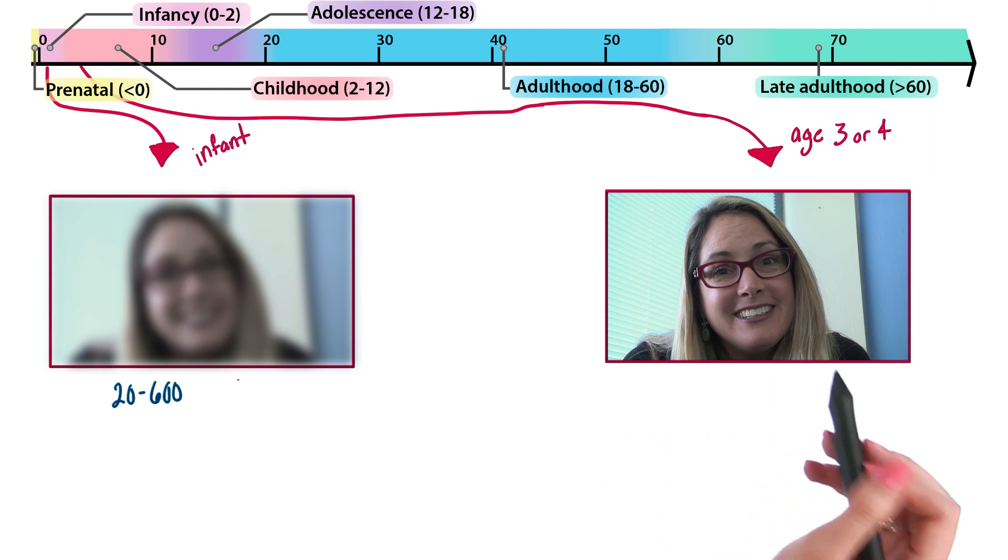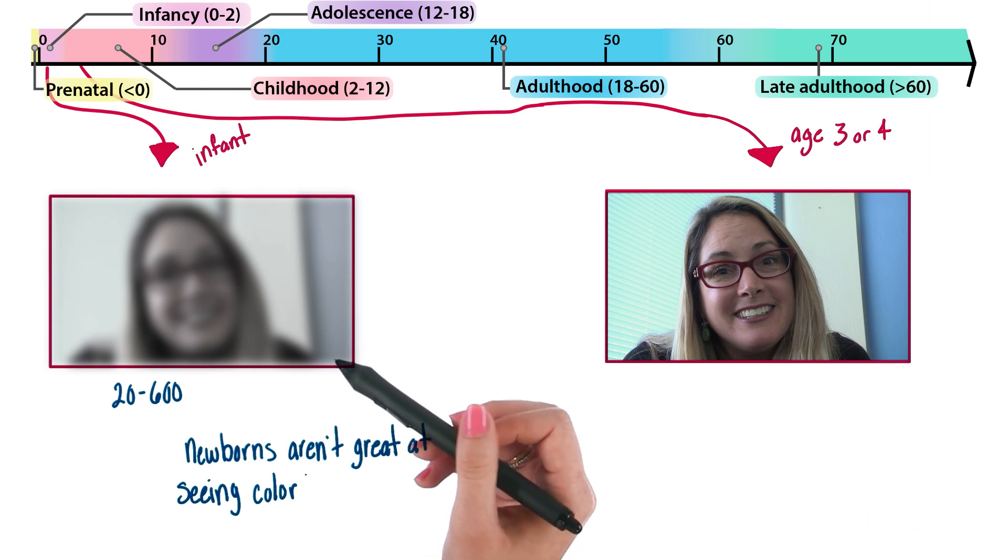It's not until about age three or four when vision is similar to that of an adult. An interesting point is that newborns aren't great at seeing color. Our eyes have to develop in order for us to see color.